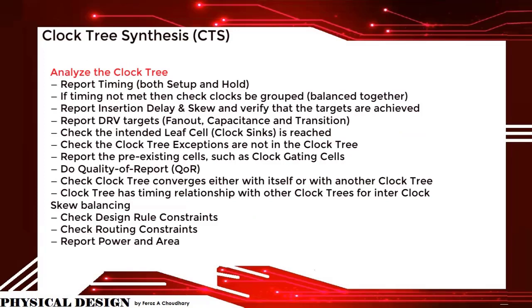Analyzing the clock tree: report timing for both setup and hold. If timing is not met, check that clocks are grouped and balanced together. Report insertion delay and skew and verify that the targets are achieved. Report DRV targets — fanout, capacitance, and transition. Check that the intended leaf cell clocking is reached. Check that clock tree exceptions are not in the clock tree. Report pre-existing cells such as clock gating cells. Do quality of report (QOR). Check clock tree coverages and timing relationships with other clock trees for inter-clock skew balancing. Check design rule constraints, routing constraints, and report power and area.